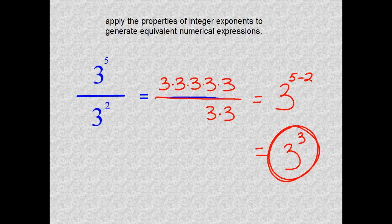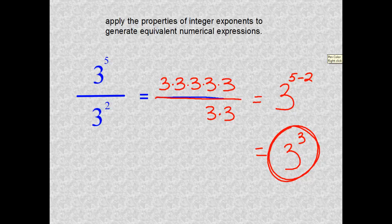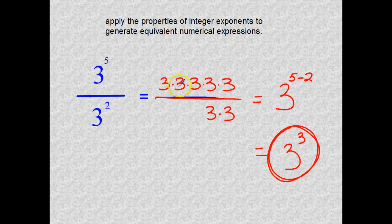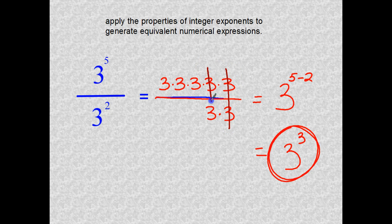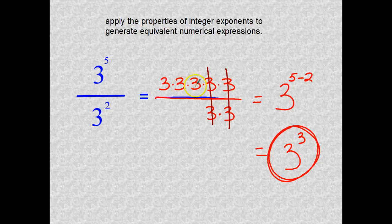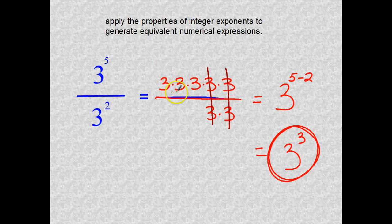And let me just show you the reasoning behind that. If we were to do our basic canceling in fractions and I have my five in the top and my two in the bottom, by basic cancellation, I can knock out a three in the top and a three in the bottom. And how many are we left with? We're left with one, two, three, which is why it is three to the third power, because we're left with three of these products in the numerator.